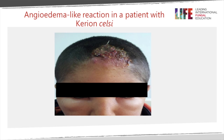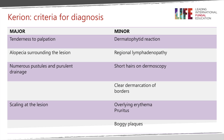Sometimes, depending on the location — for example, a kerion lesion in the frontal region of the scalp — it can impede lymphatic drainage from the face, resulting in an angioedema-like reaction in the patient.